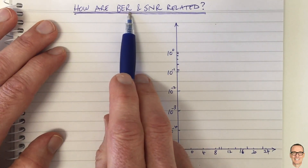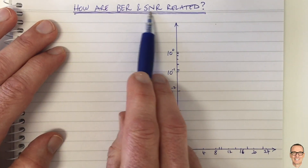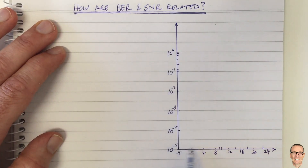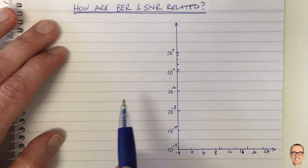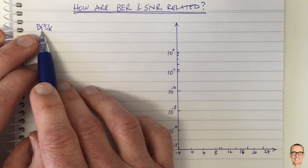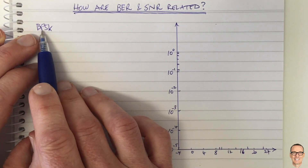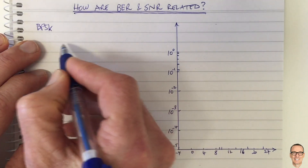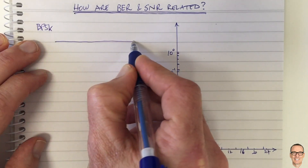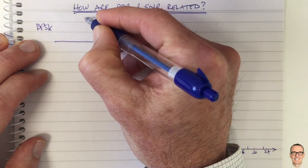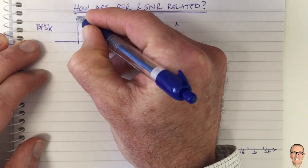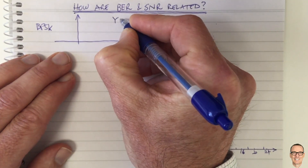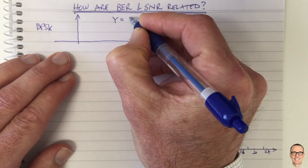How are bit error rate and signal-to-noise ratio related in digital communications? Let's start thinking about the most basic digital binary phase shift keying. I'm going to draw a probability density function for the output — what you receive if you have a signal sent and received in Gaussian noise.